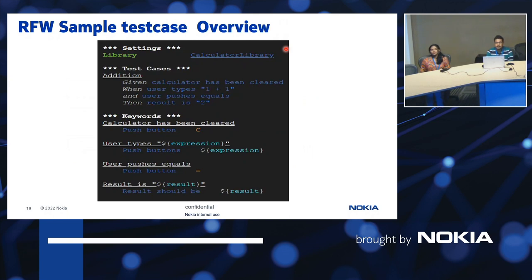This is followed by keywords, which are the test steps. For a new person, once they use these keywords in this format, the first step is the calculator has been cleared — the user pushes button C. Then the user types an expression like 1 plus 1, pushes the equals button, and the final result would be the dollar-result variable, which is value 2. Overall, this is the format for a sample robot test case with very clean syntax.